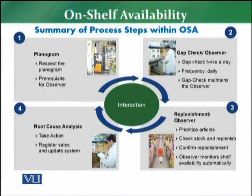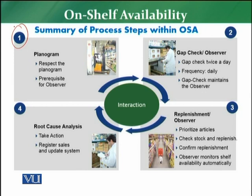The first part was the planogram. There are two key things: you have to respect the planogram — whatever direction has been given by the planning manager, the merchandising head, or the replenishing head. You also have to provide the prerequisite for Observer, which is the replenishment tool. Observer will be based on the planogram which you have set into the system, so the planogram must be in place.